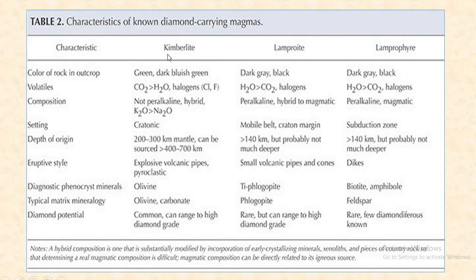The characteristics of these magmas — kimberlite, lamproite, and lamprophyre — are compared in terms of color, volatile composition, setting, depth of origin, eruption style, diagnostic phenocryst minerals, typical petrology, and diamond potential. All three magma types — kimberlite, lamproite, and lamprophyre — are presented together for comparison.